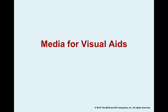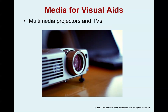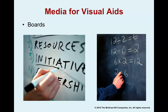Visual aids can be conveyed to audiences through a variety of media. The first is multimedia projectors and televisions. In a physical classroom, there's typically a television with HDMI capabilities or an Apple TV that you can sync an iPad or iPhone to. If you're taking this course online, you'll need to find a way to display your PowerPoint to a television or projector in your chosen location. In the real world, most places will have a projector or large screen TV where you can show your PowerPoint slides or videos.